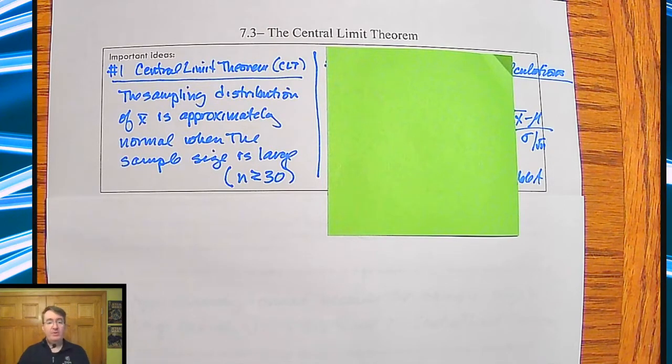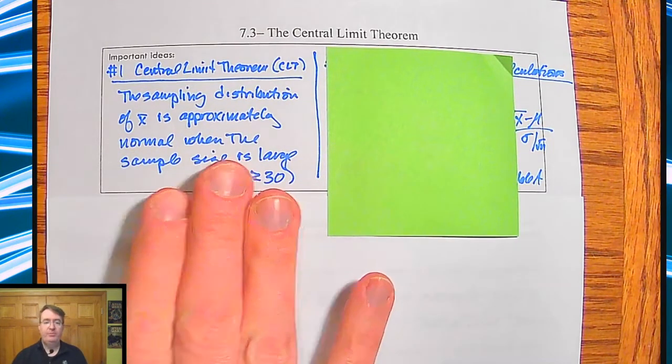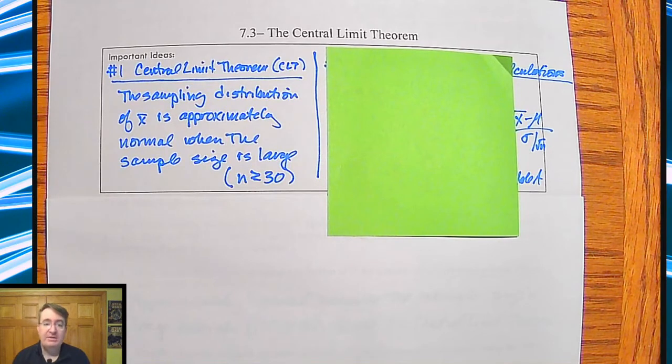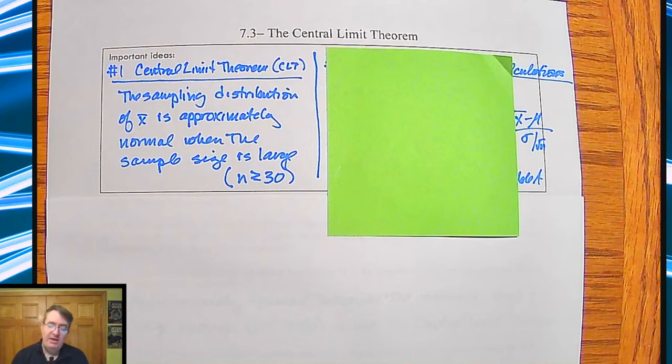So what this will allow us to do is it does not matter what the population distribution looks like. It could be skewed, it could be bimodal, whatever. If we take samples of 30 or more, boom, there we go. And that's part of the reason why small sample sizes, like you see some of these studies, it's like we studied 12 people who ate chocolate every day. You can't really do much with them for a whole variety of reasons.